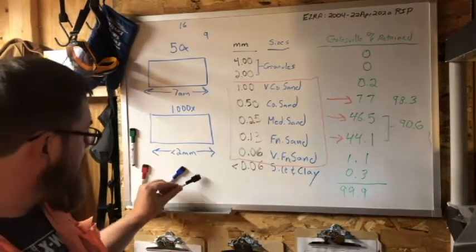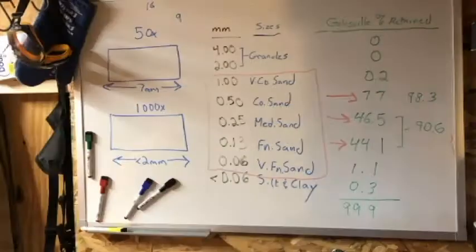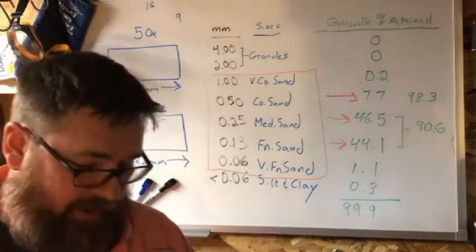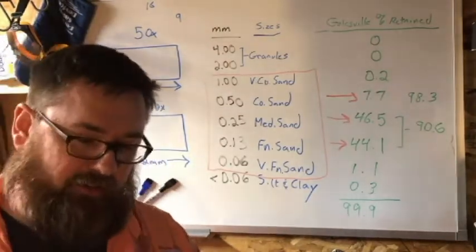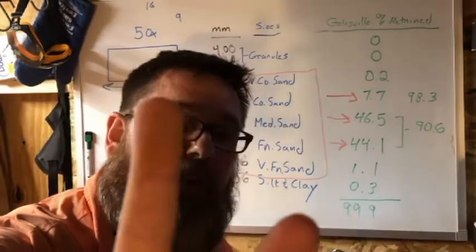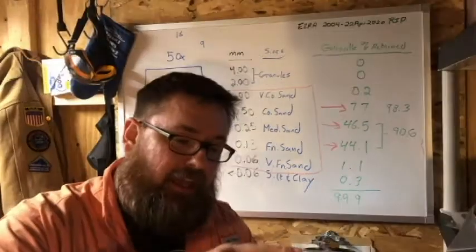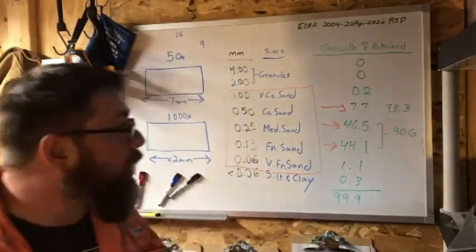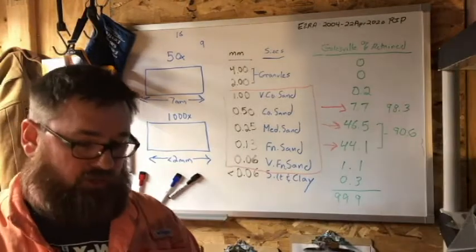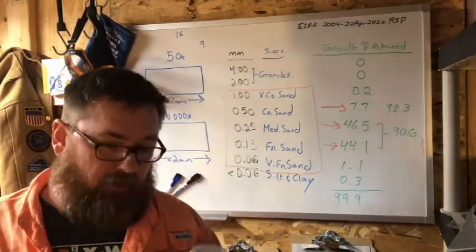I'm going to do a demonstration here, which I've already pre-recorded, to show you how tiny the Galesville is. Yes, we do this as geologists. You can barely make that out. It's hard to see. It's mostly fine to medium sand in that range, a little bit of coarse, right? We can verify that under magnification.